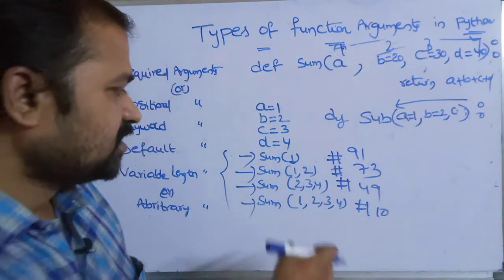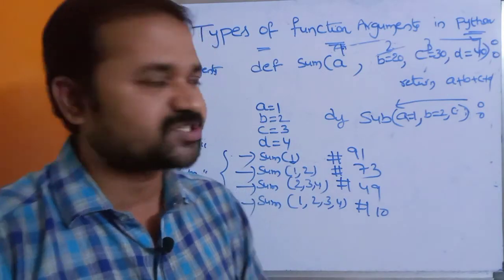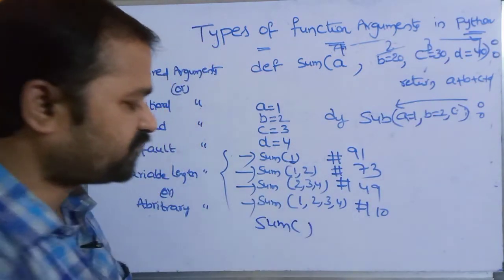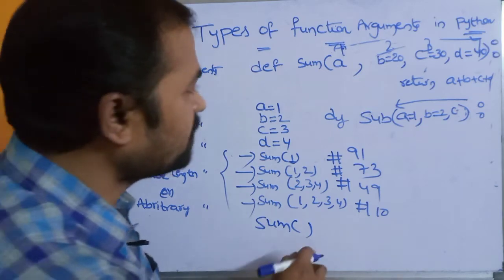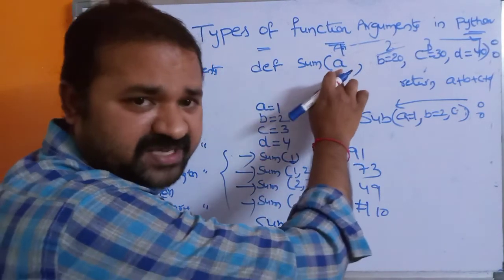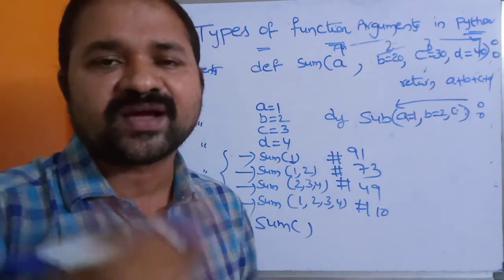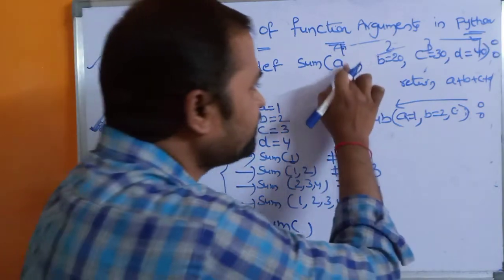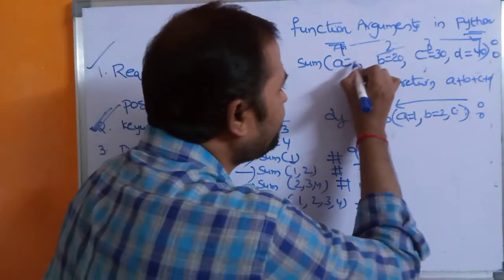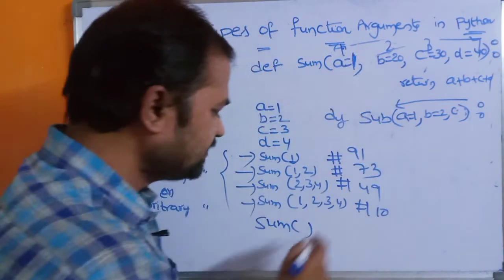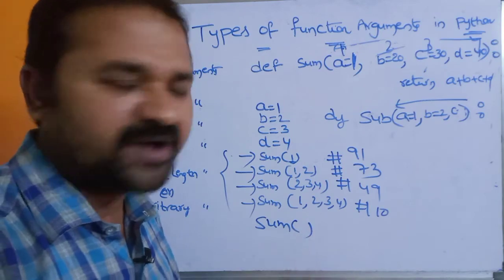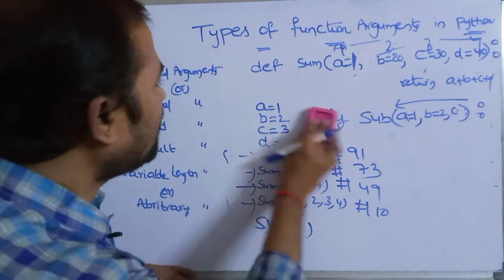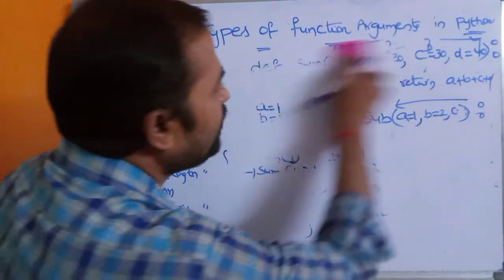If we call sum() with no arguments and all parameters have default values, then all those default values will be considered and we will get the sum. This is about the third approach, that is default arguments. Now let's see the last one, which is variable length arguments or arbitrary arguments.